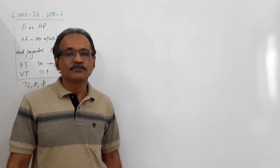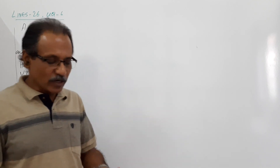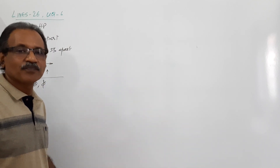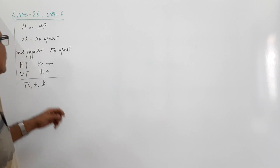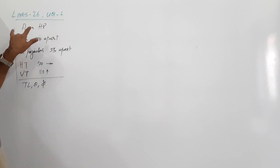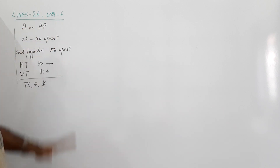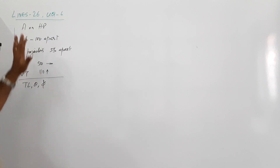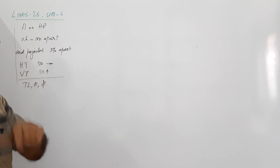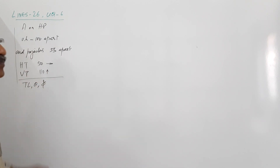Hi students, we have got a very interesting question here. NDA of a line AB is on HP. This is the abstract of the question; the full question is given in the description.